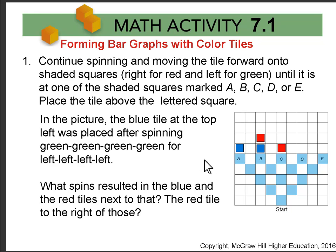In this picture there's a blue tile here above A and we got that by starting here and spinning left, left, left, left. So four greens in a row. And what spins would we need? Because there are more than one option to get to the B and the C that are pictured here.